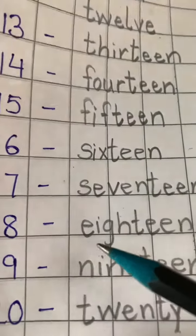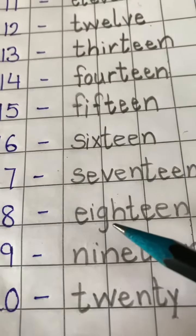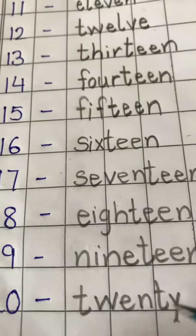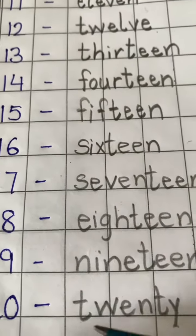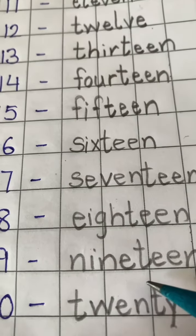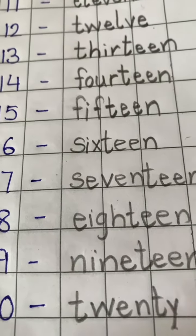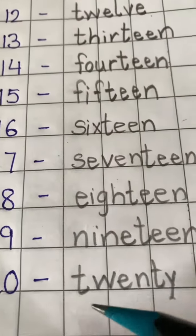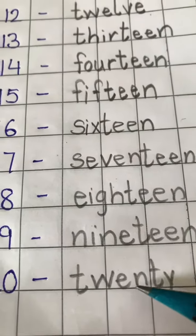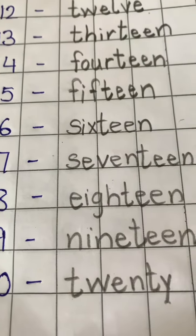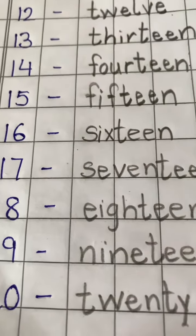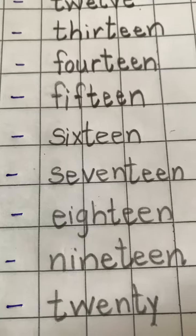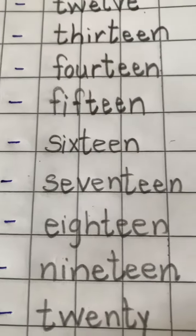18 — E, I, G, H, T, E, E, N — eighteen. 19 — N, I, N, E, T, E, E, N — nineteen. 20 — T, W, E, N, T, Y — twenty. So practice writing number names 11 to 20 in Mathematic Notebooks. Thank you.